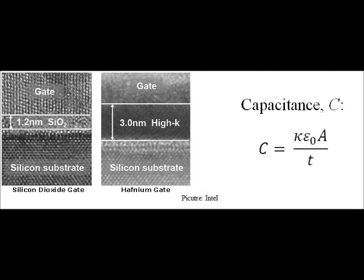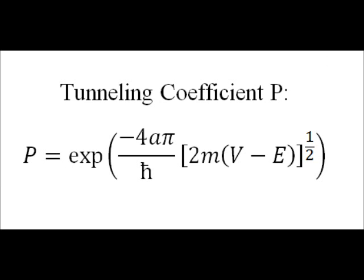As transistors are becoming increasingly smaller in area A, the gate oxides need to either become increasingly thinner or have a higher dielectric constant in order to maintain the proper capacitance, as described by this equation, where k is the relative dielectric constant and t is the thickness. For IC transistors at the nanometer scale, silicon dioxide gate thickness is as small as 1.2 nanometers. As described by the equation seen here, the probability of tunneling decreases exponentially with increasing gate thickness. V is the energy level of the barrier, while E is the kinetic energy of the wave.